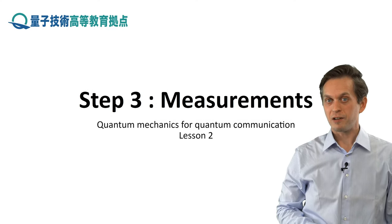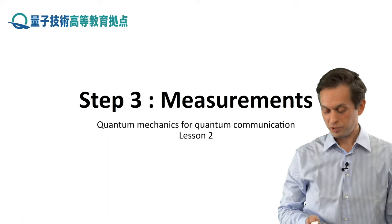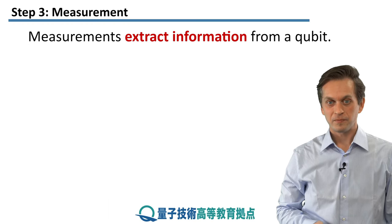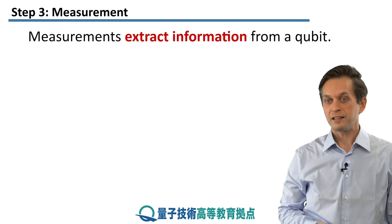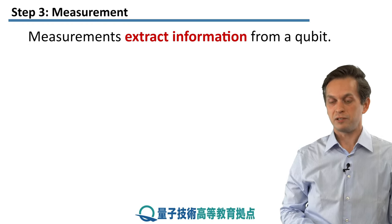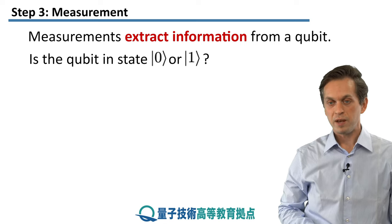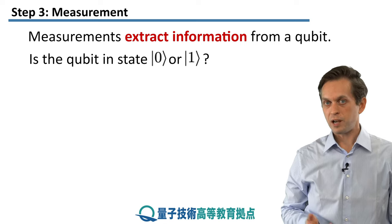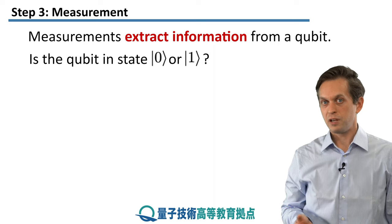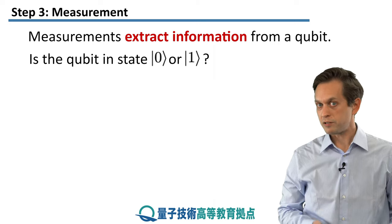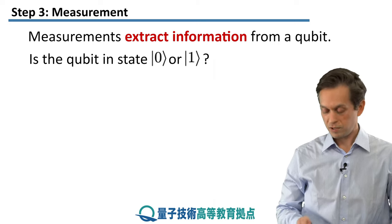Let's consider measurements and how they can extract information from quantum qubits. A measurement extracts information from a qubit. How does it work? Basically, a measurement asks the question: is my state that I prepared in a state 0, or is it in a state 1?